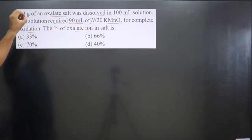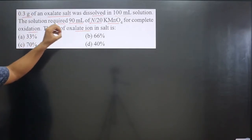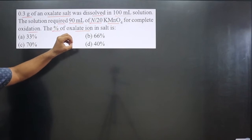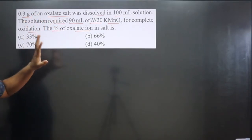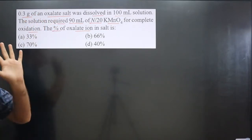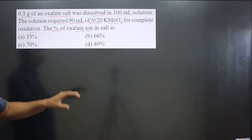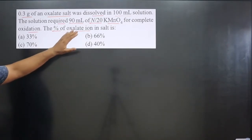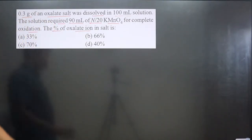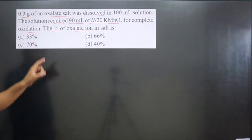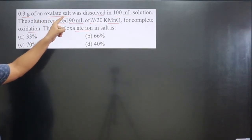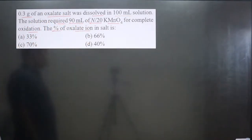Out of 0.3 gram, how much oxalate ion is present — that value we need to calculate. And what is its percentage? First of all we need to calculate the mass of oxalate ion present in this total mass. From the oxalate salt we have two substances: oxalate salt and KMnO₄.